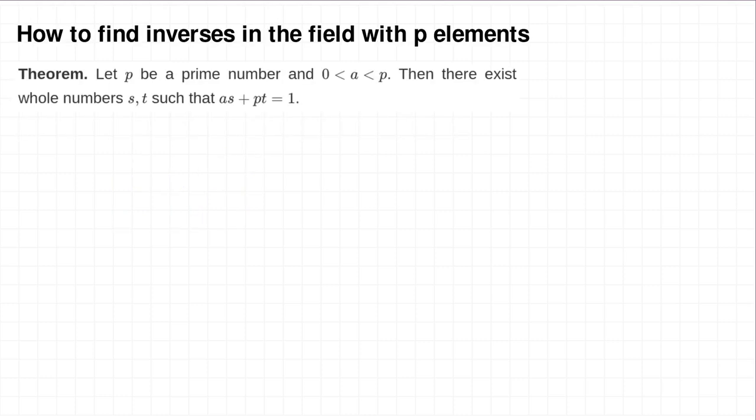And division with remainder is what's going to help us to come up with multiplicative inverses in finite fields with p elements. So what's on this slide is a theorem here. It says if p is a prime number and a is a whole number between 0 and p, then there exist whole numbers s and t such that a times s plus p times t is equal to 1. So why is this helpful in our quest for multiplicative inverses? Well, the answer to that is that this number s is the multiplicative inverse for a in the finite field F_p.